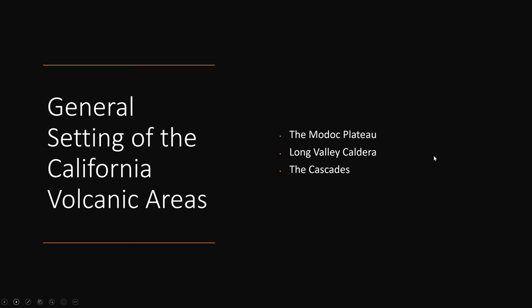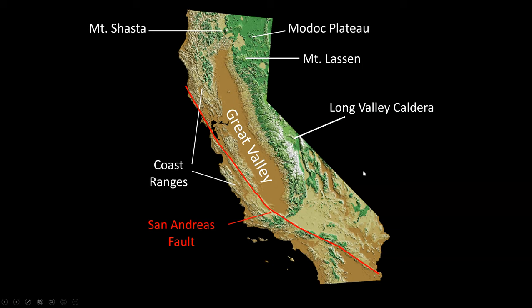The general setting of California volcanic areas includes three main separate areas: the Modoc Plateau, Long Valley Caldera — which we talked about with Basin and Range — and the Cascades. Long Valley Caldera is in the Basin and Range province.